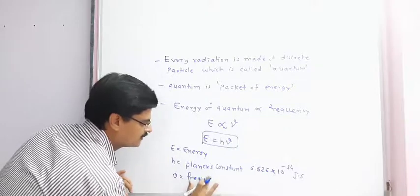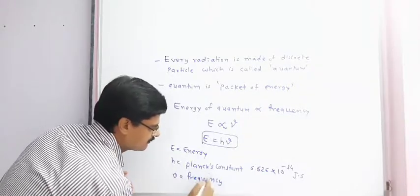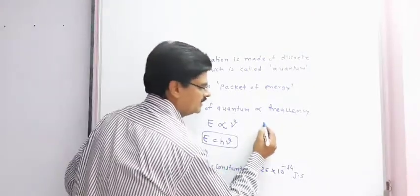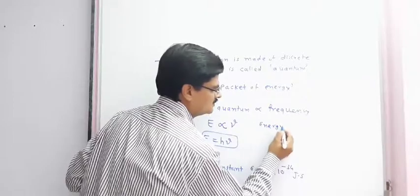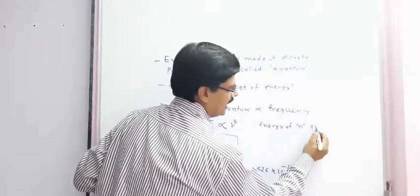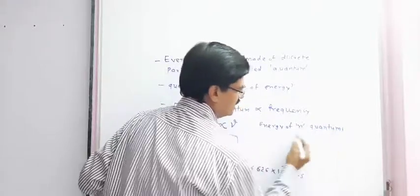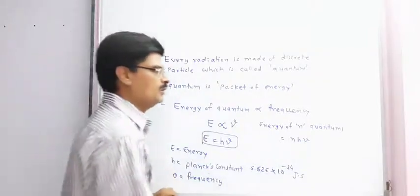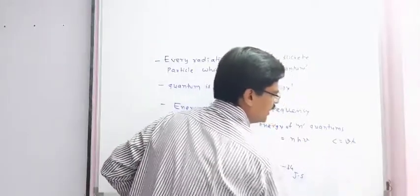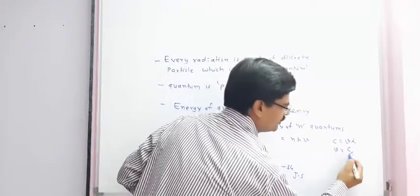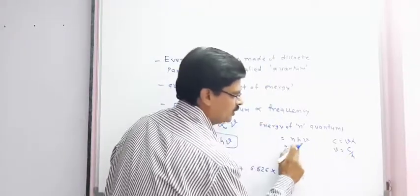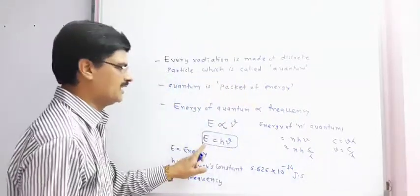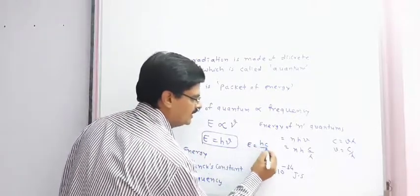Energy of n quanta is equal to nhν. Since C = nu × lambda, therefore nu = C / lambda. Substituting, we get E = nhc / lambda, and for a single quantum: E = hc / lambda.